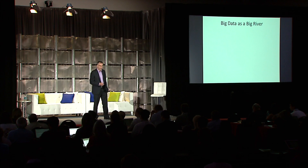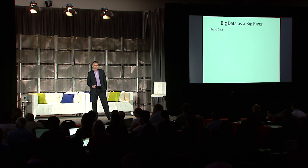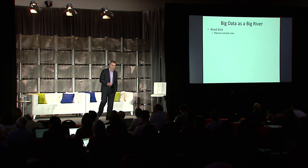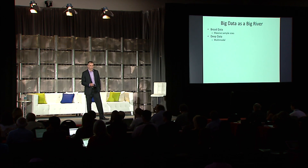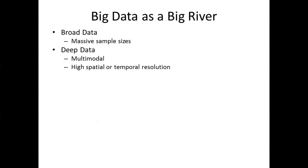So for a bit of an overworked metaphor, if we think about big data as a big river, there are a few different parameters we can think about. Like a river, big data can be broad — here we're usually talking about massive sample sizes in the hundreds or thousands of subjects. Like a river, big data can be deep — for imaging, we're usually thinking about multimodal imaging, or imaging acquired with incredibly high spatial or temporal resolution.